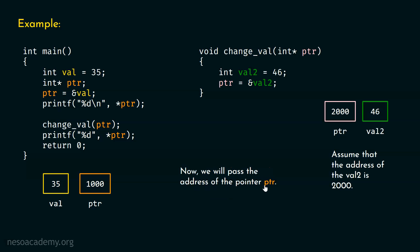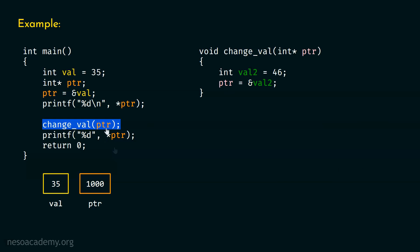Now we will pass the address of the pointer ptr. Instead of passing the value, we will pass the address of the pointer ptr, and let's see whether the changes will get reflected or not. Instead of passing ptr, we will pass the address of ptr — we just put ampersand in front of it. This time we are passing the address of ptr, that's why it is called the address-of operator. But understand this: this pointer is a pointer to an integer, but we want a pointer to a pointer. We are passing the address of the pointer and not the address of the variable, so it is important to put one more star here.